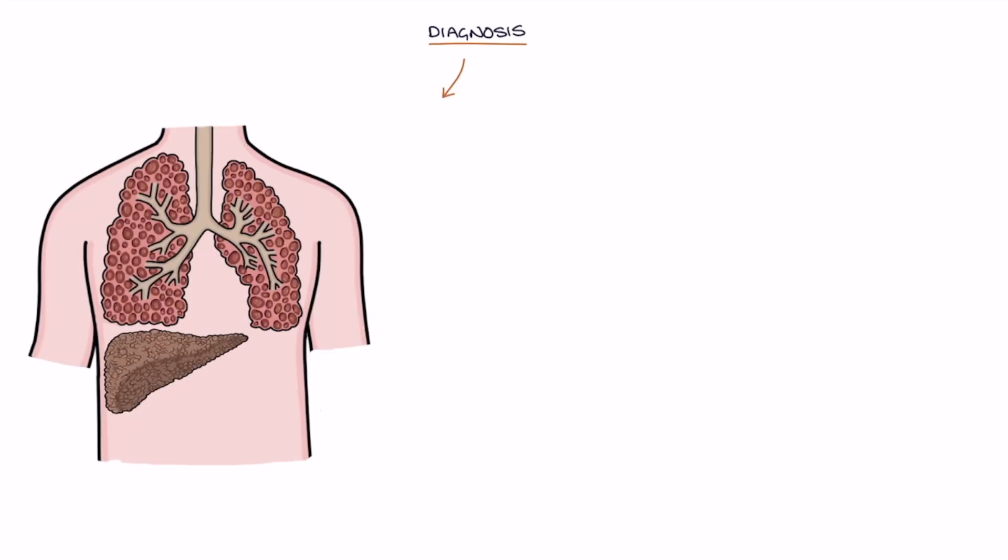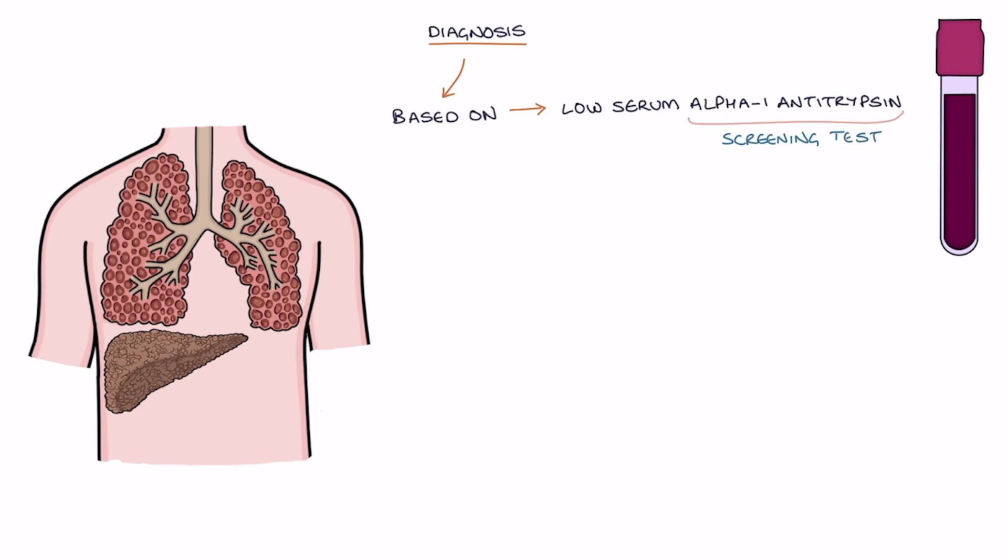Let's talk about the diagnosis. The diagnosis is based on the presence of low serum concentrations of alpha-1 antitrypsin. Testing the alpha-1 antitrypsin is the screening test, as well as genetic testing.